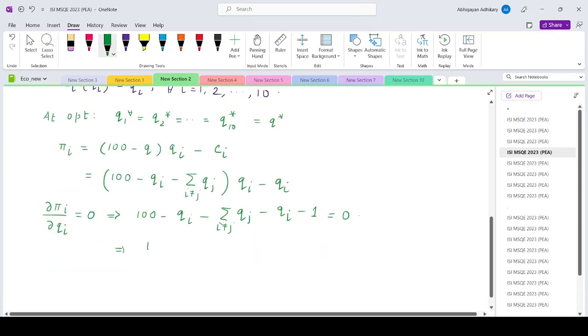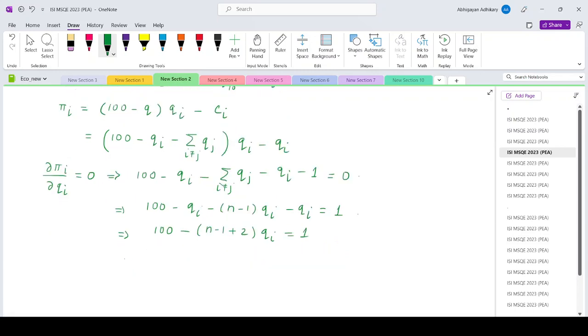At optimal, all the firms will produce same output, so this can be replaced by n minus 1 qi minus qi minus qi equals 1. So this will be basically 100 minus n minus 1 plus 2 qi equals 1. So 100 minus n plus 1 qi equals 1.